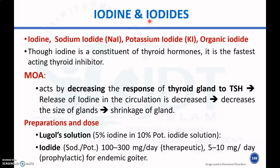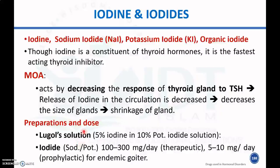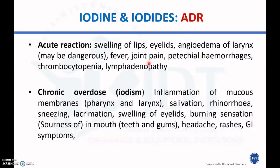The next class is iodine and iodides — iodine, sodium iodide, potassium iodide, and organic iodides. Although iodine is a constituent required for thyroid hormone synthesis, it can also be used as a thyroid inhibitor. It acts by decreasing the response of the thyroid gland to TSH from the anterior pituitary, thereby decreasing release of iodine into circulation, decreasing the size of the gland, and leading to shrinkage. Preparations include Lugol's solution and potassium iodide.